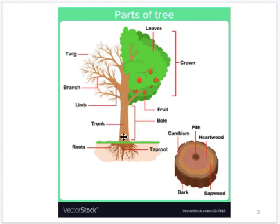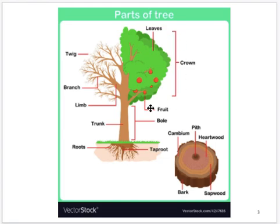Then there's the trunk, also referred to as the bole. It extends from the ground up, and it's broken into different sections which we'll cover later. There are also branches, twigs, and limbs depending on size. The crown is where the limbs and branches start — it may have leaves or it might be bare, depending on the time of year and what kind of tree it is.